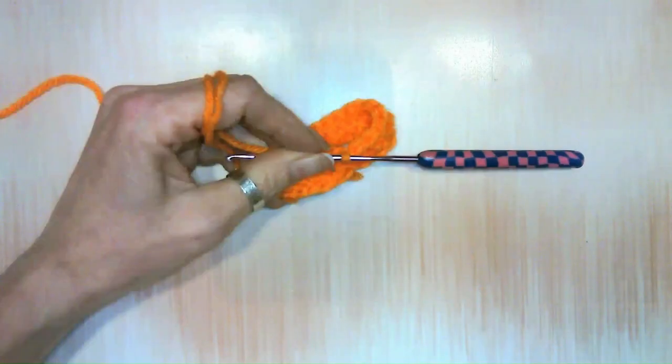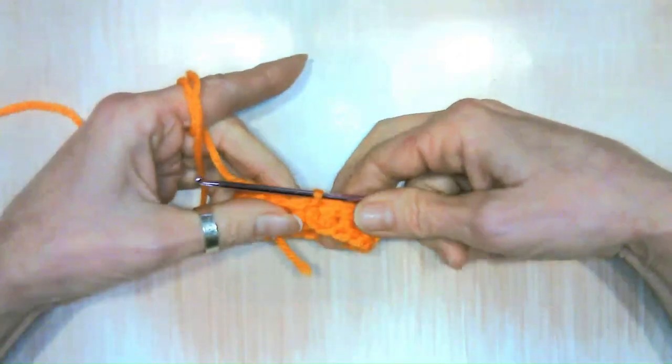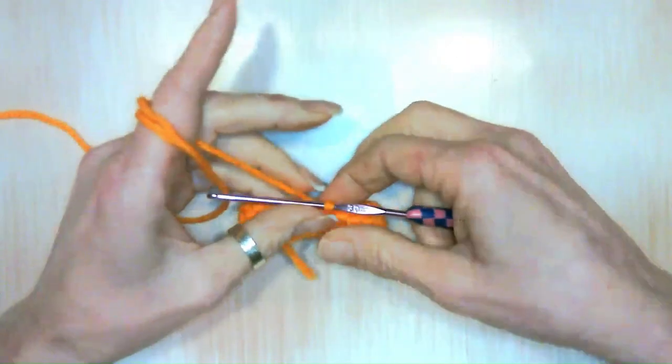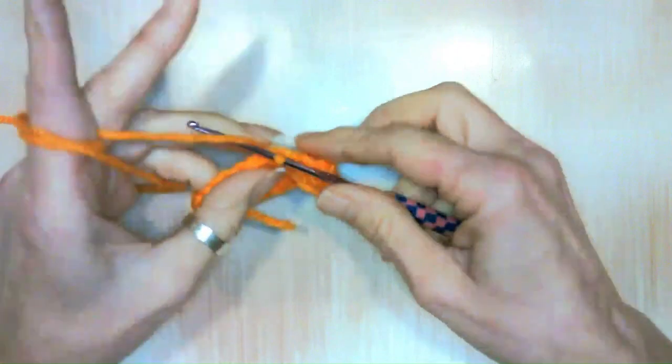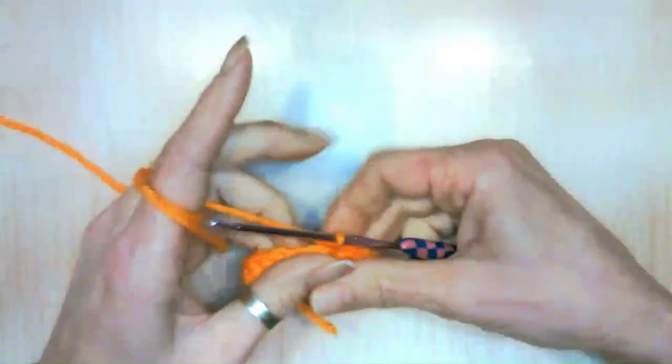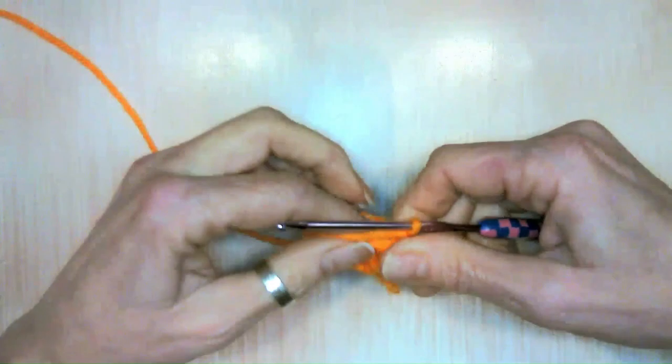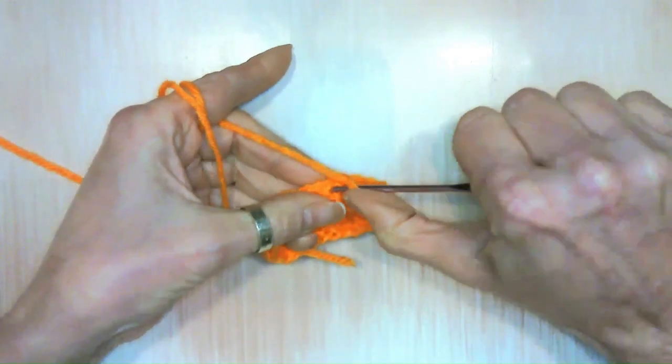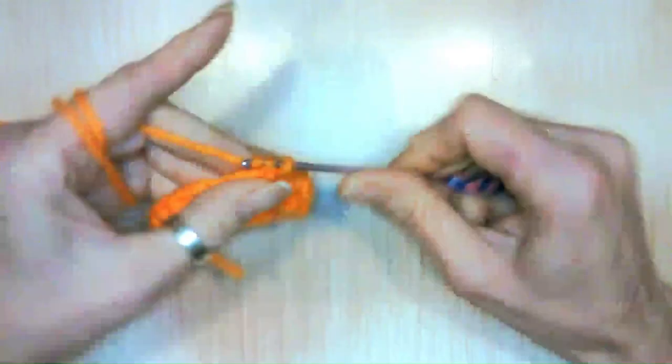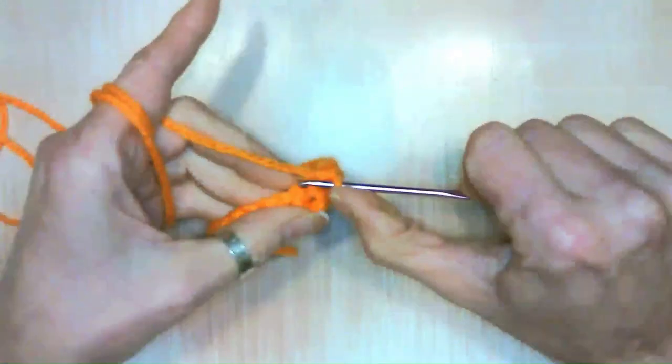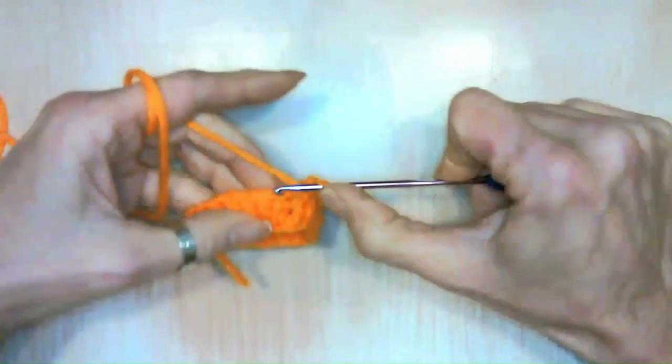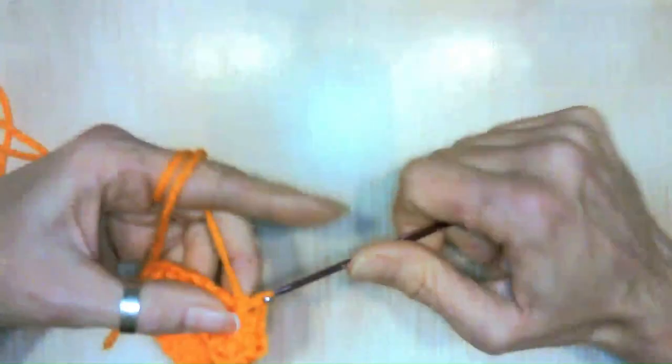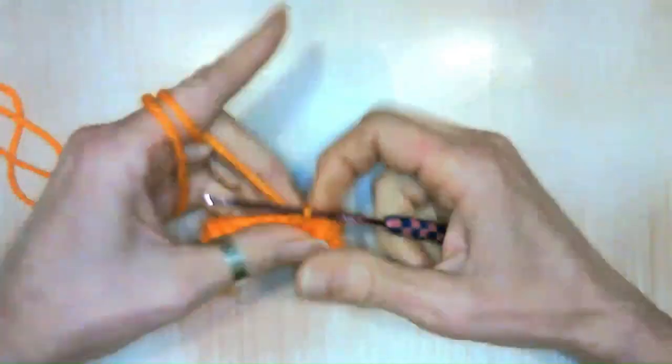We are now going to, starting in the stitch that we just slip stitched, do one double crochet all the way around in each stitch. So that'll be 22 double crochets all the way around, and I will meet you at the end with your 22 double crochets, hopefully remembering to tuck that yarn.